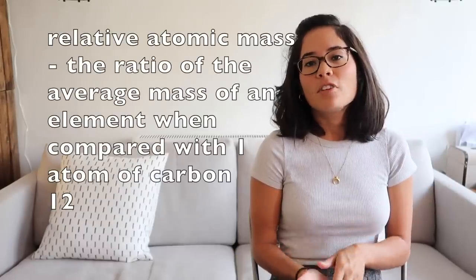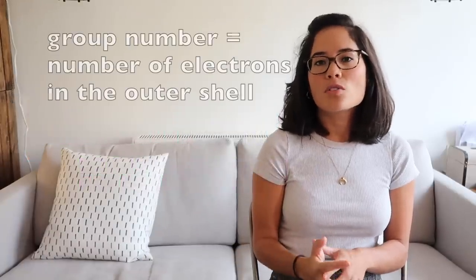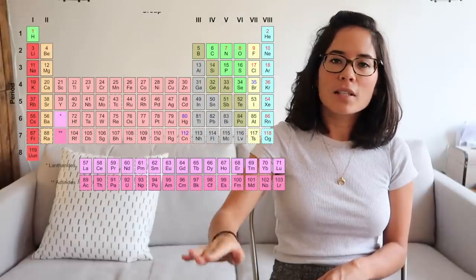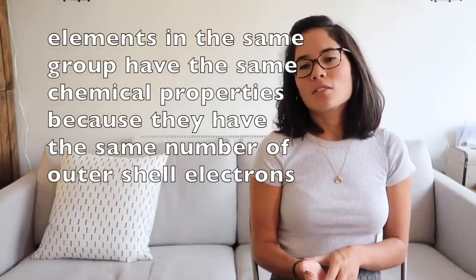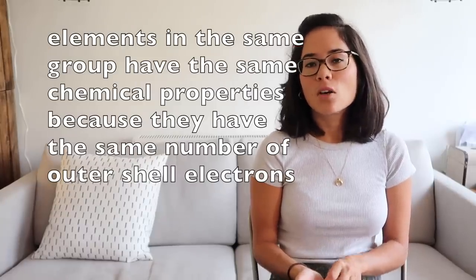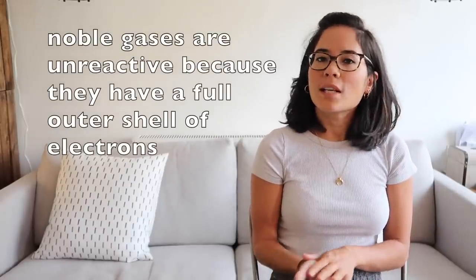Relative atomic mass is the ratio of the average mass of an element compared with one atom of carbon-12. Group numbers run along the top of the periodic table and correspond to the number of electrons in the outer shell; period numbers run down the side and correspond to the number of electron shells. Elements in the same group have similar chemical properties because they have the same number of outer-shell electrons. Group 0 elements are the noble gases — unreactive because they have full outer shells.